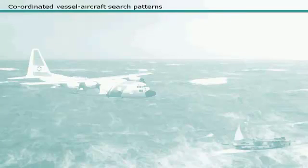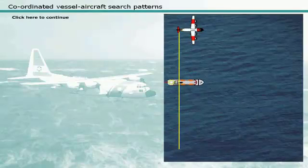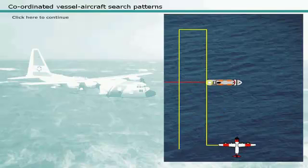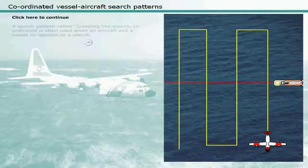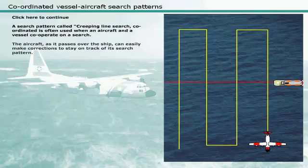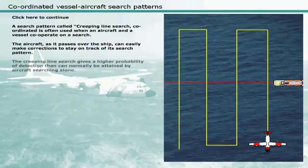Coordinated vessel-aircraft search patterns are normally only used when an on-scene coordinator is present to give direction to and provide communications with the participating craft. A search pattern called creeping line search coordinated is often used when an aircraft and a vessel cooperate on a search. As the aircraft passes over the ship, it can easily make corrections to stay on track of its search pattern. The creeping line search gives a higher probability of detection than can normally be attained by aircraft searching alone.